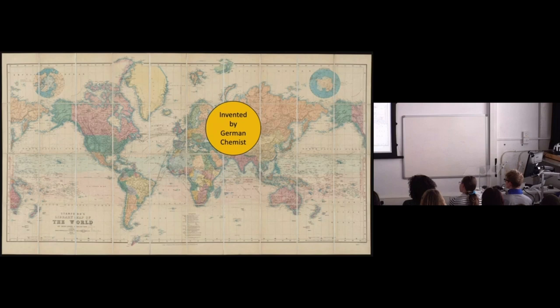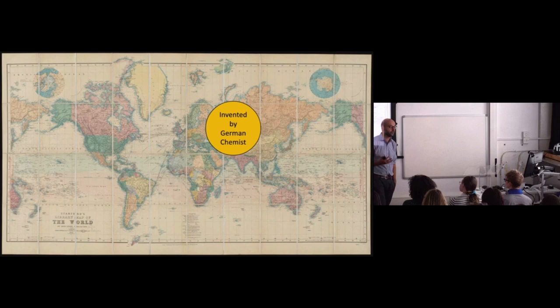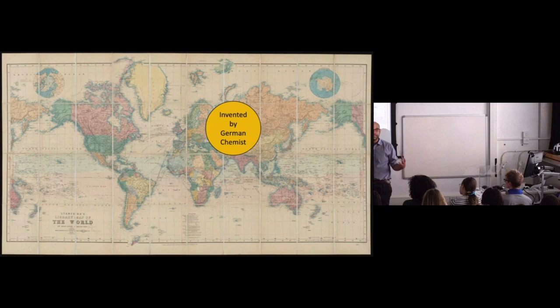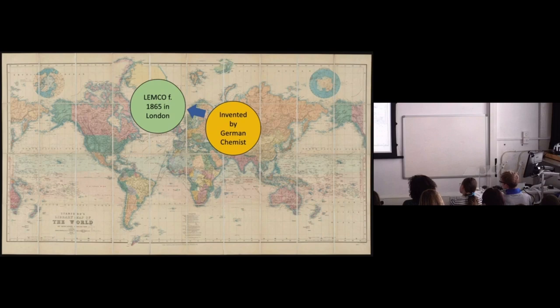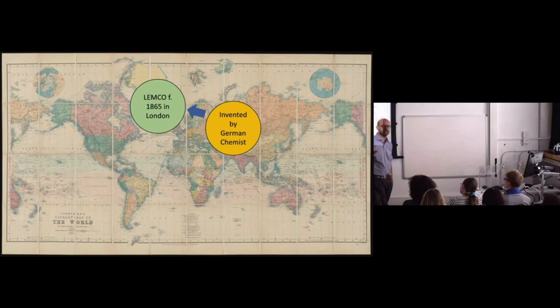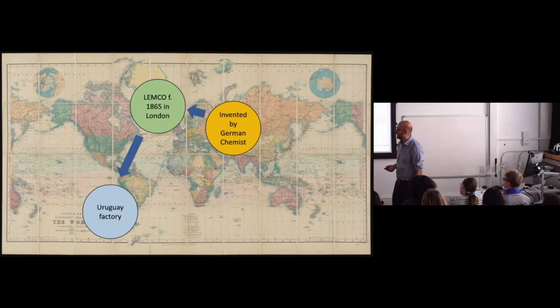So let's go back to the OXO Cube. That quintessentially British product is actually invented by a German chemist, who touts it around different parts of Europe trying to find an investor, until he finds one in London — which at the time, as the heart of the largest empire, is where capital and money are concentrated. Lemco is founded in 1865 in London, the financial capital of the world. So maybe this could just be a story of a product invented by a German becoming British — fairly local. But actually, most of it is made in a factory all the way down in Uruguay.